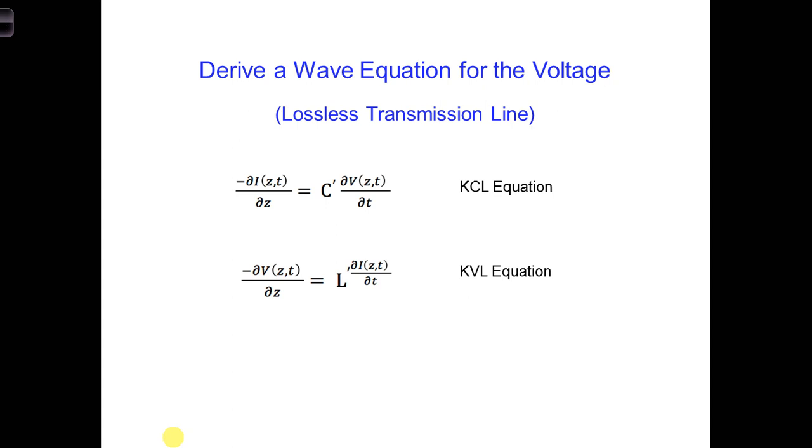As a result, there's only two unknowns left, the voltage and the current. Two equations with two unknowns. Going with option 2, we combine these two equations, and this will allow us to obtain one equation with one unknown, which we can solve.